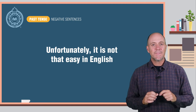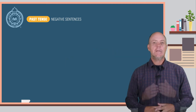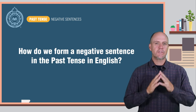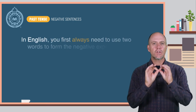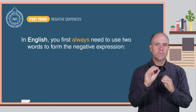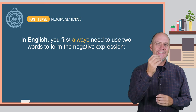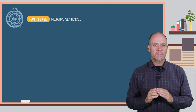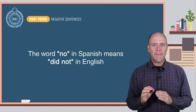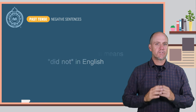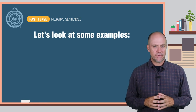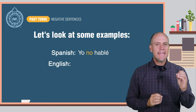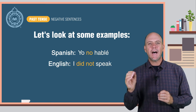Unfortunately, it's not that easy in English. So how do we form a negative sentence in the past tense in English? In English you always need to use two words to form the negative expression: 'did' plus 'not.' In other words, the word 'no' in Spanish means 'did not' in English. Let's look at some examples. Spanish: yo no hablé. English: I did not speak.